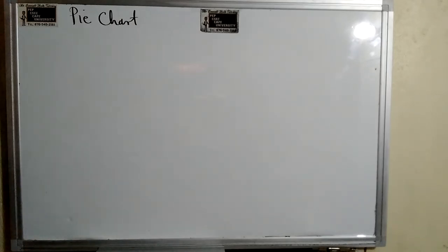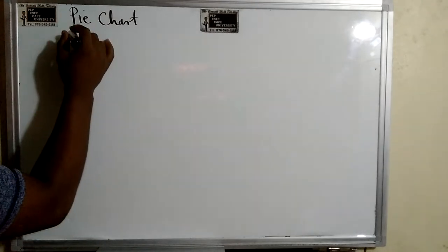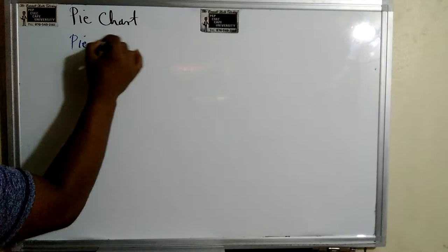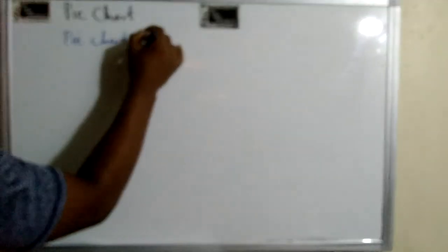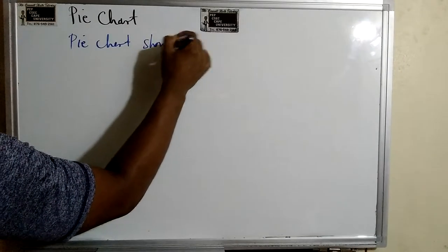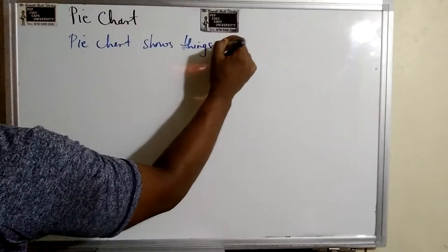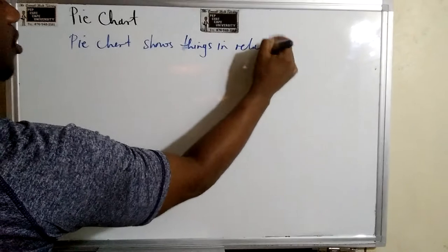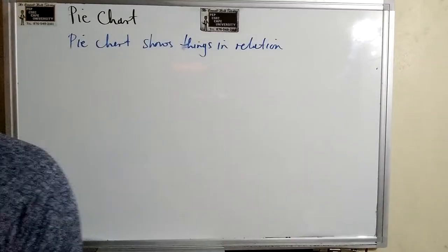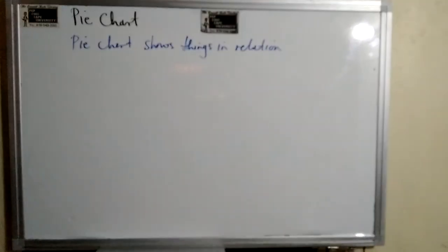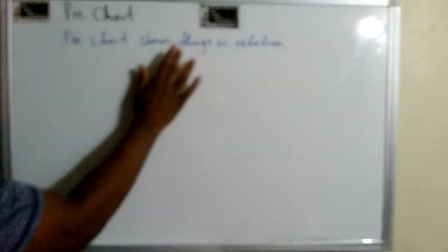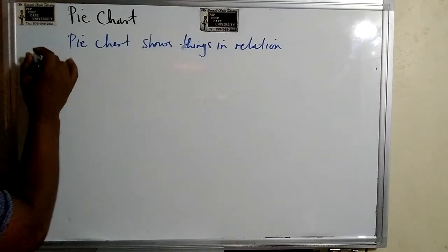Alright, so we are going to create a pie chart. Now, a pie chart, you have to do things that are in relation. There must be some form of relationship, right? Like a comparison. So I did this with my class the other day. We looked at the most popular social media platform.